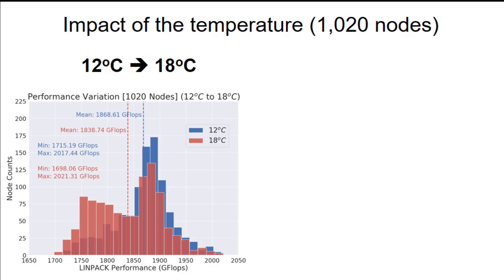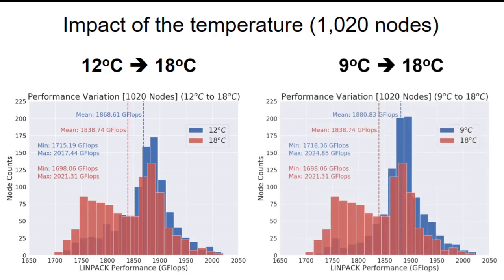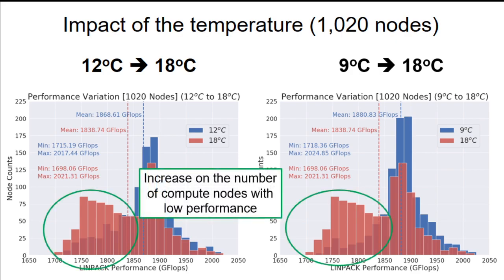And this graph shows the histogram distribution of the LINPACK performance points when changing the temperature set point from 12 to 18 degrees Celsius. And here, when changing from 9 to 18 degrees Celsius. And on both cases, we can clearly observe an increase on the number of compute nodes in the low performance range. And we should note that we could only evaluate 1,024 nodes, or just one-eighth of the previous set, and we used only 1,020 nodes by getting rid of 4 nodes with outlier values. And from the operational point of view, this will theoretically increase the probability of including low-performance nodes on the parallel applications. And as a result, this can affect those applications requiring local and global barrier synchronizations.